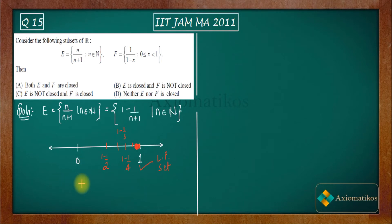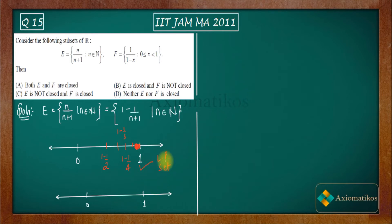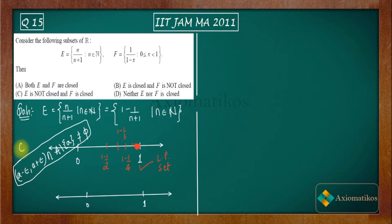Let us recall the definition of a limit point. We say a point a is a limit point of a set A if the interval (a − ε, a + ε), minus the singleton {a}, is non-empty for every ε > 0. If this holds for every ε greater than 0, then we say a is a limit point for the set A.